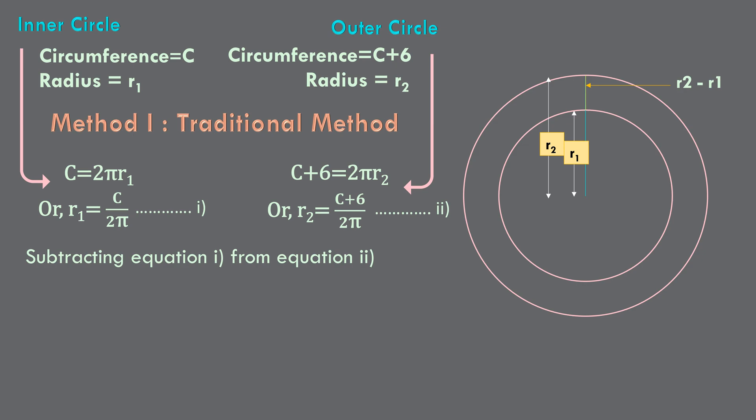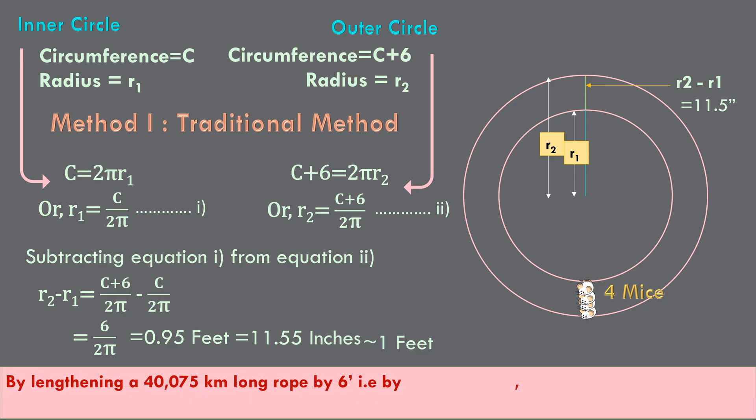Subtracting equation 1 from equation 2 will get R2 minus R1 equals 6 by 2pi equals 0.95 feet which is equal to 11.5 inches which is nearly equal to 1 feet. Even only 5 inch space would be sufficient for a mouse to crawl under. So, it seems not only one mouse but at least 4 mice can crawl under it stacked on top of the other. Isn't it interesting? By lengthening a 40,075 km long rope by 6 feet or by 0.000045% or by the height of a human being we can lift off the equator by about 1 feet.